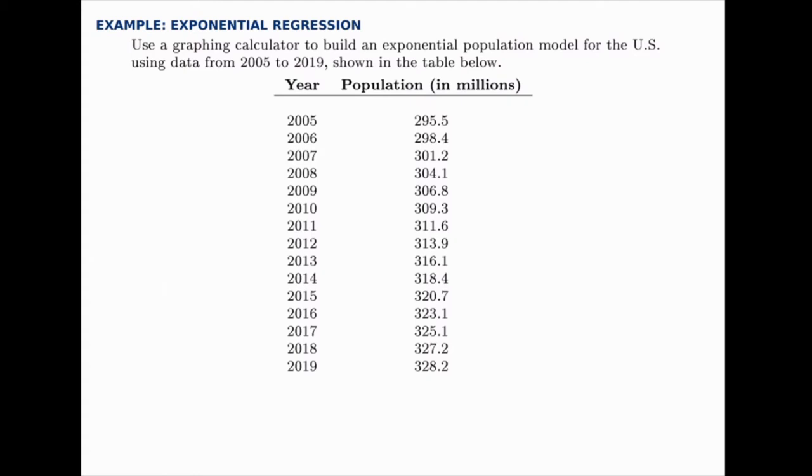So the first year in 2005, the population was 295,500,000 roughly, and the last year in 2019, it was just over 328 million.